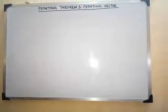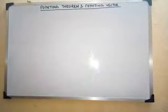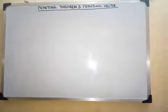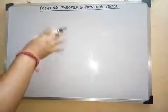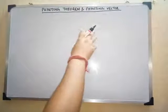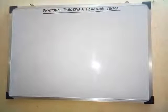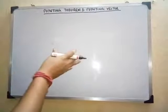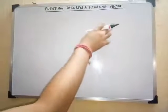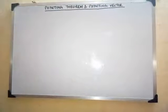In this class we will discuss the Poynting theorem and the Poynting vector. This is the conclusive part of electromagnetic fields. We will first discuss and prove the theorem, and also cover the concept of the Poynting vector. Sometimes in exams they ask for the Poynting theorem as well as the Poynting vector together, so don't miss out the Poynting vector.